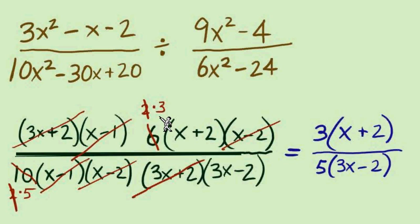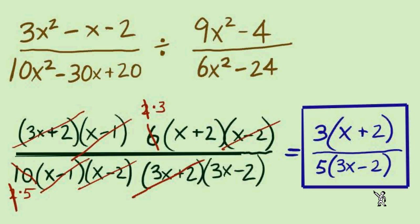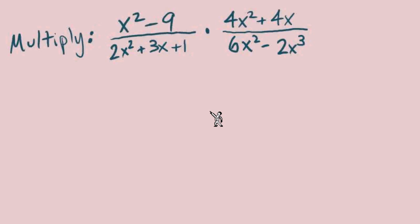Left over from the numerator we have a 3 and this binomial factor (x + 2). In the denominator we have the 5(3x - 2), and there's our answer. I say just leave it in factored form, put a box around it, make it look nice if you choose to, but there it is.